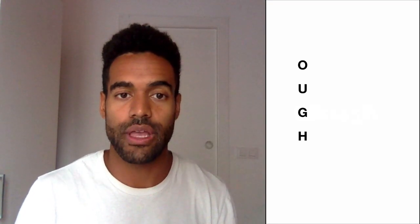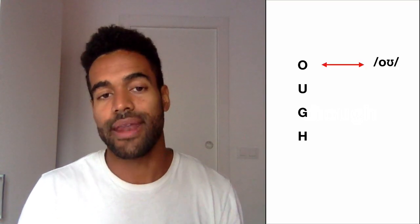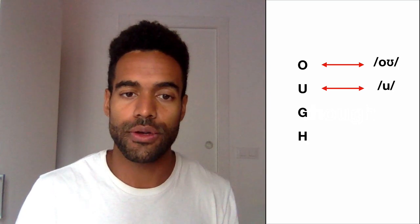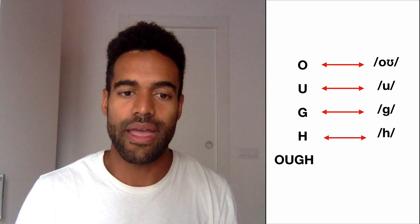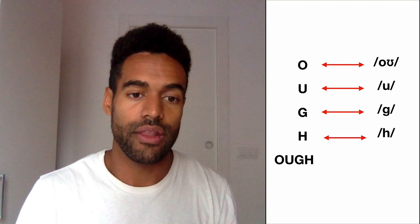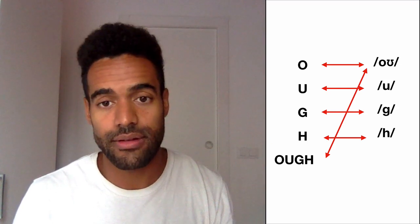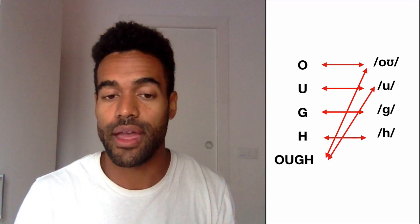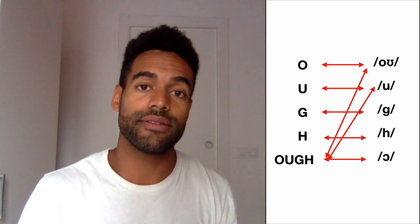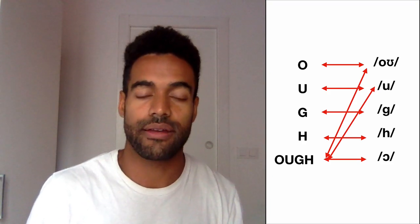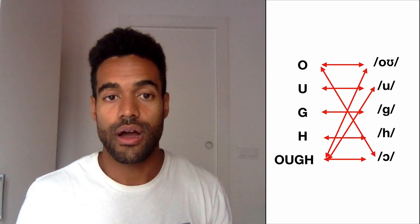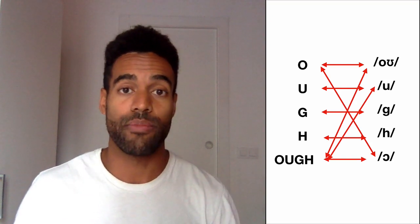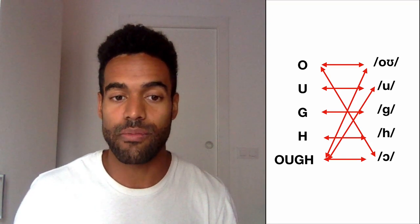I wanted to map that out. Here are the four symbols: O, U, G, H. The O is an O, U is a U, G is a G, H is an H. But now we have OUGH which, in the case of 'though,' can be the O sound; in 'through,' it can be the OO sound; in 'thought,' we get a new sound — AH. And that AH sound isn't only captured by OUGH — it's also sometimes written with just the letter O. For example, 'dog' — AH — is the same AH from 'thought,' and that's written D-O-G.